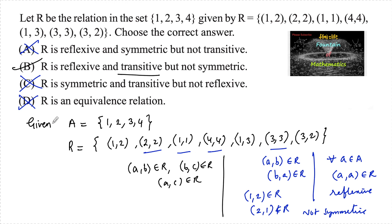Checking transitivity: (1,2) and (2,2) are in R, so (1,2) is there. Also (1,3) and (3,3) give (1,3), and (3,2) and (2,2) give (3,2). So the relation R is reflexive and transitive but not symmetric, confirming option B.